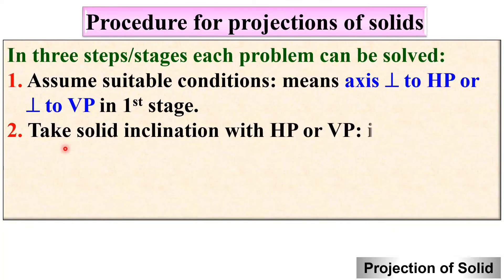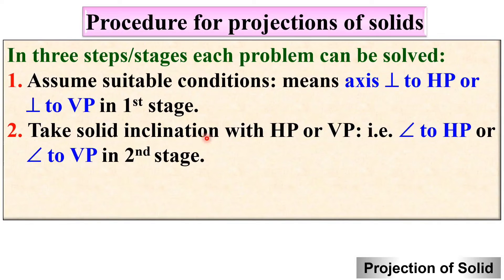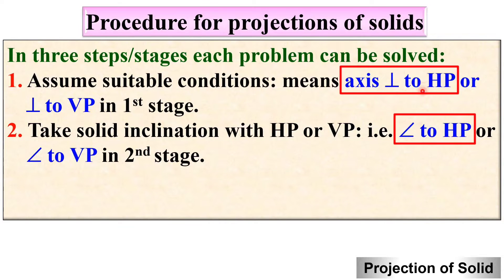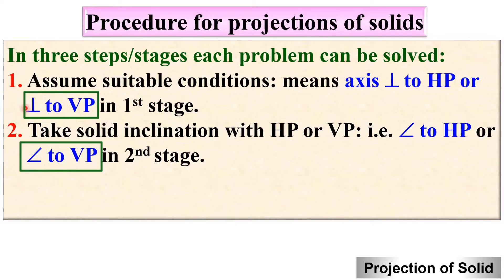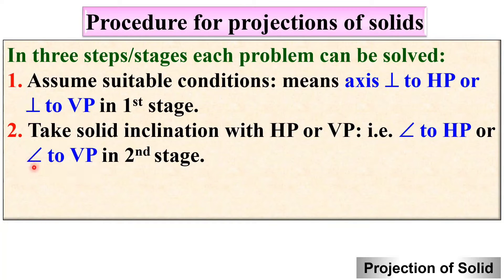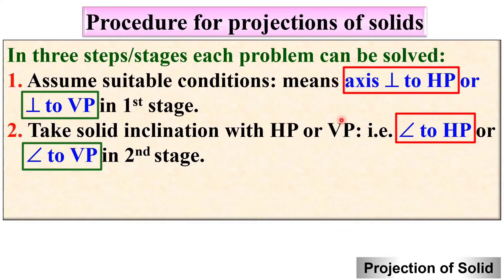In the second stage, take the solid inclination either with HP or with VP. If in the first stage the axis is perpendicular to HP, then in the second stage it must be inclined to HP. If you assume in the first stage that the axis is perpendicular to VP, then in the second stage it must be inclined to VP. That is the corresponding relation between the first stage and the second stage.